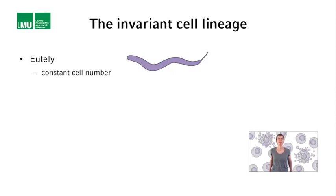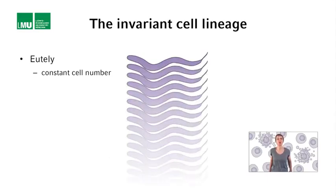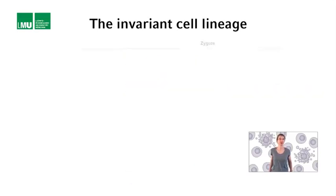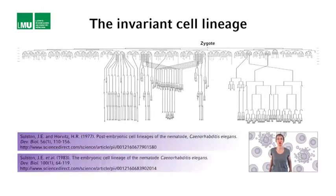Not only does every C. elegans worm have exactly 959 somatic cells, but the development of C. elegans occurs in a highly reproducible manner from animal to animal. This means that we know the ancestry and the descendants of every cell — basically the entire blueprint of a C. elegans worm. This blueprint is referred to as cell lineage. The entire somatic cell lineage was worked out in the late 1970s and early 1980s by John Sulston and co-workers, also at the MRC LMB in Cambridge, UK. And this is what you see here.